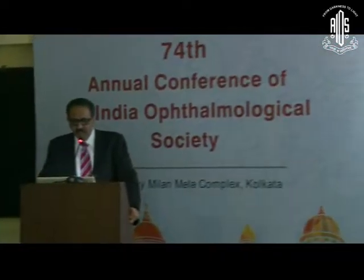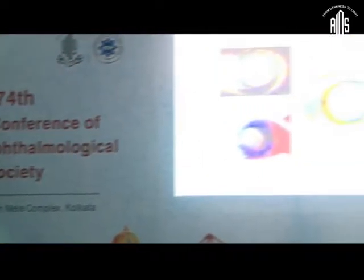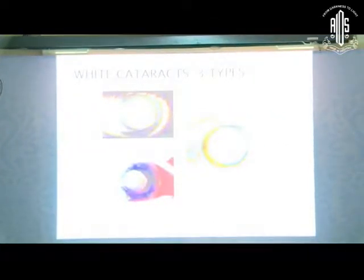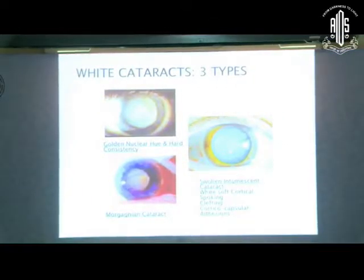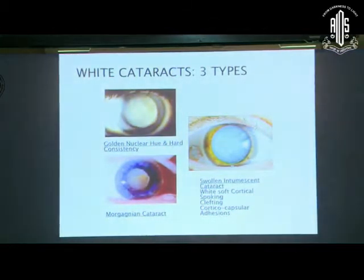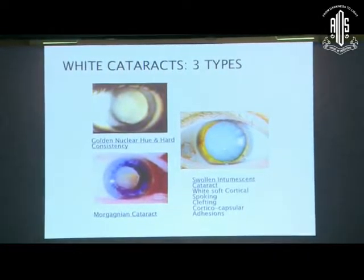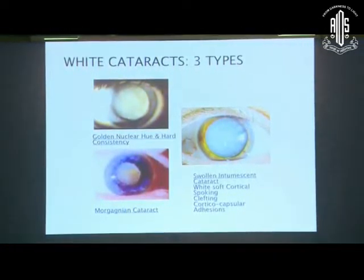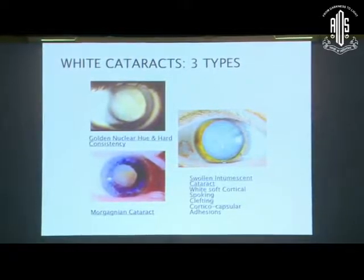One type is the sclerosed type, which has the golden nuclear hue and hard consistency. The second is the Morgagnian type, and the third is the Intumescent type, which invites all the discussions whenever we talk of white cataracts.